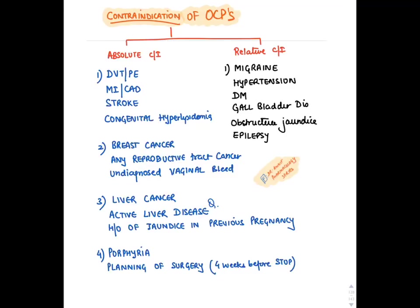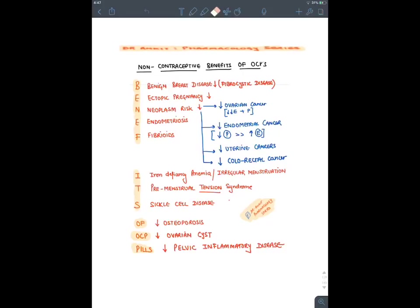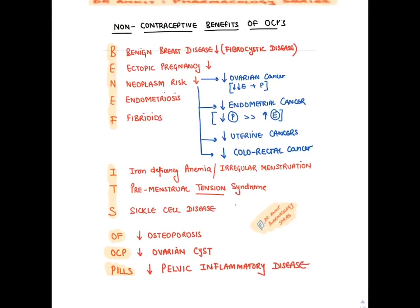Absolute contraindications: MI, stroke, DVT, pulmonary embolism, hyperlipidemia, breast cancer, any reproductive/vaginal cancer, liver disease or cancer, history of jaundice in previous pregnancy, porphyria, and planned surgery (must be stopped 4 weeks before). Relative contraindications: migraine, hypertension, diabetes mellitus, gallbladder disease, obstructive jaundice, and epilepsy.